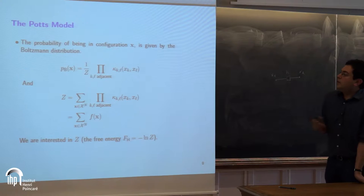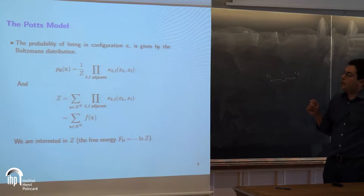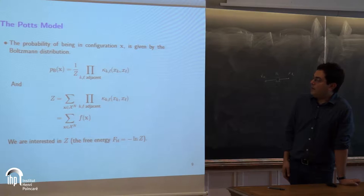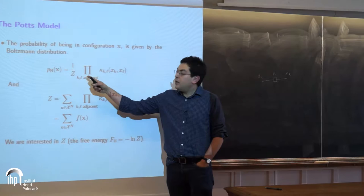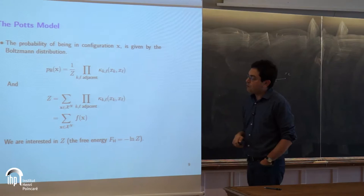For each configuration x, I can compute the Boltzmann distribution up to scale factor Z. Z is just the sum over the product of the factors. So if you give me a configuration, I can compute p up to scale factor Z. My interest is basically computing the normalization constant, or the log of it, which is the free energy.